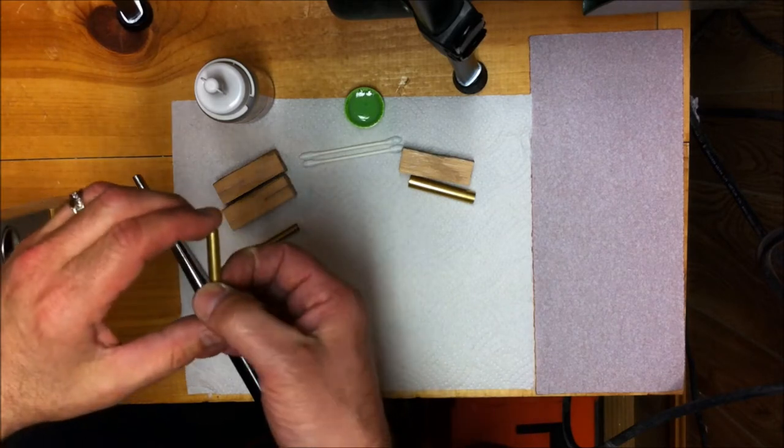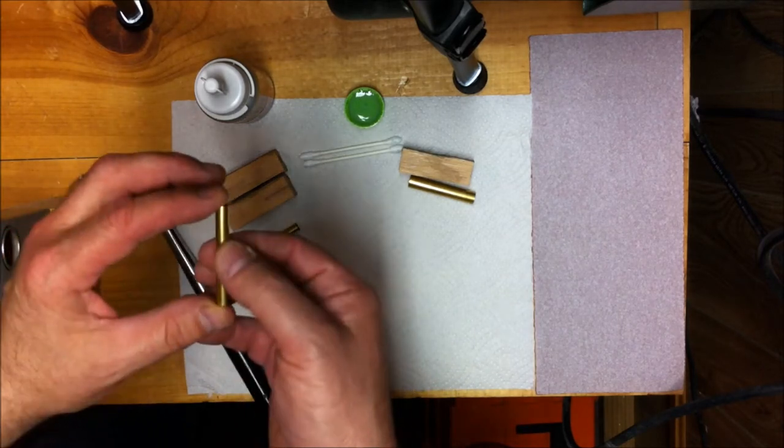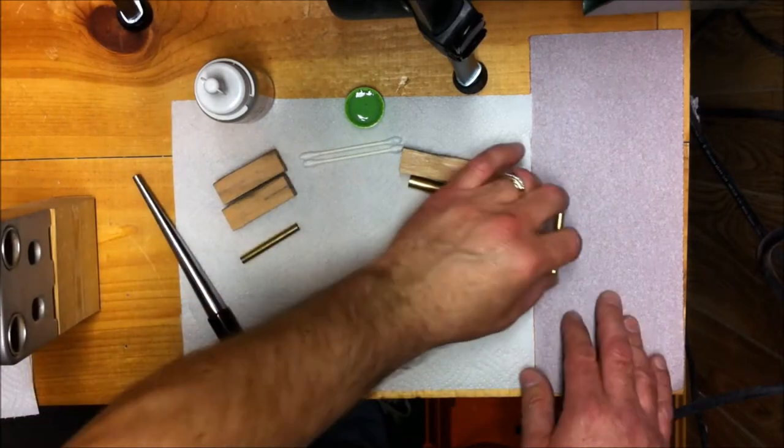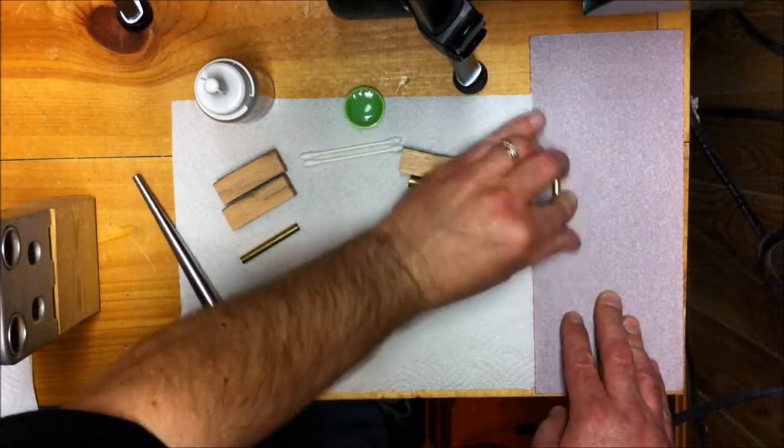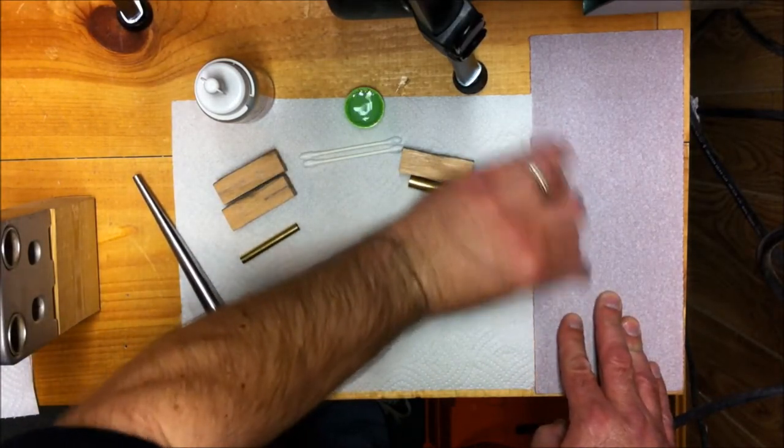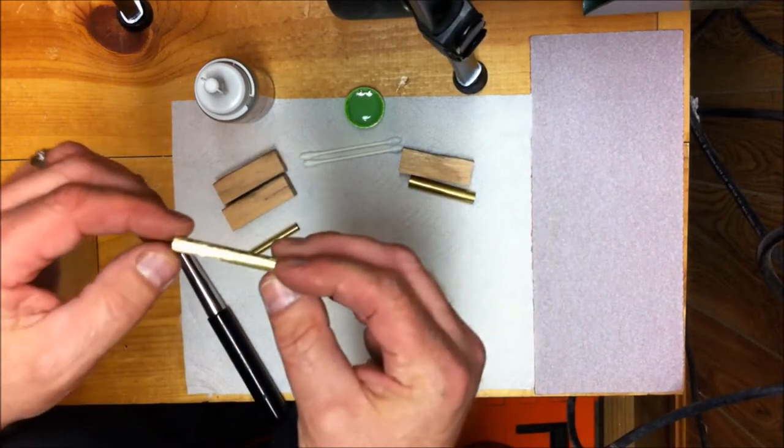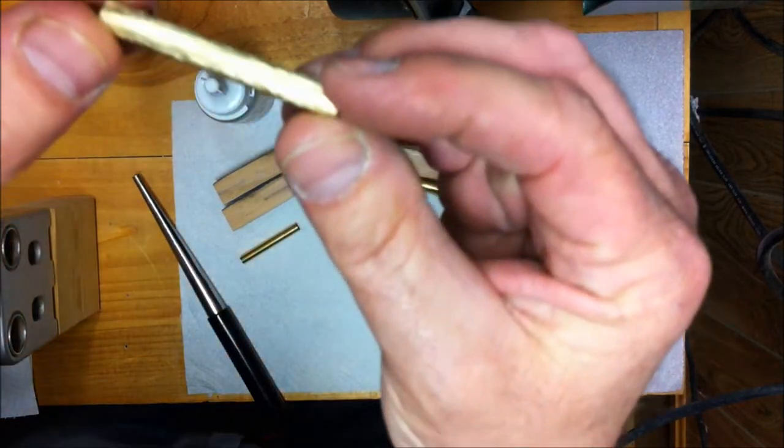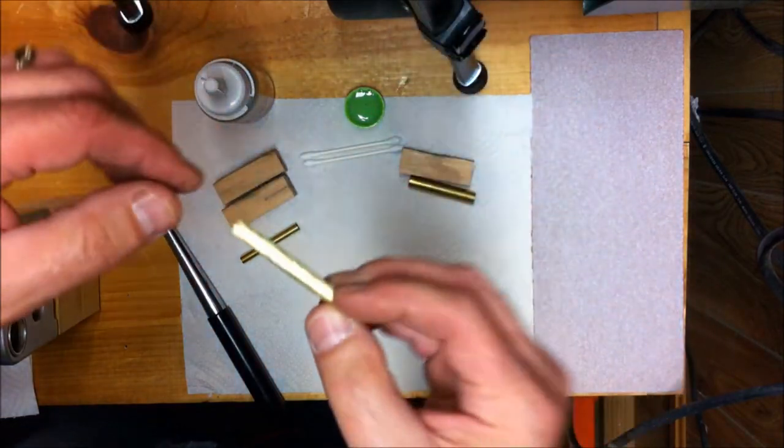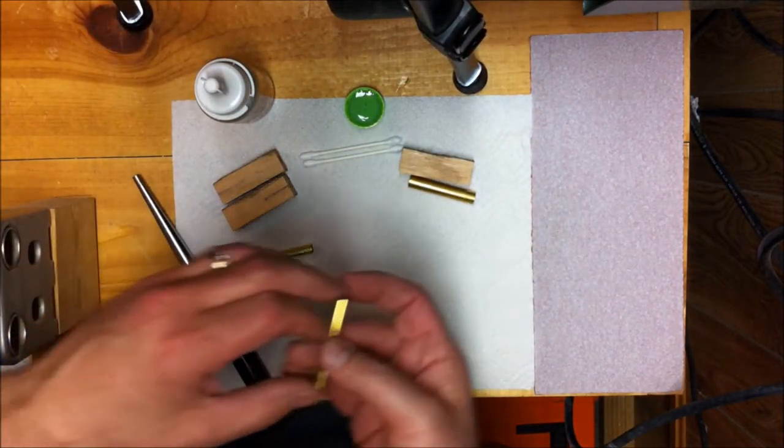You take your brass tube and the first thing you want to do is rough it up because it's actually very smooth. We're going to rub it on some sandpaper and put a lot of nice little scratches in it. I don't know if you can see those or not, I hope you can. So let's go ahead and do the other two brass tubes.